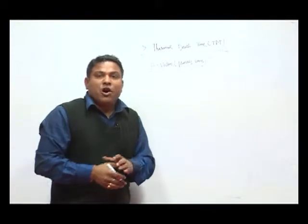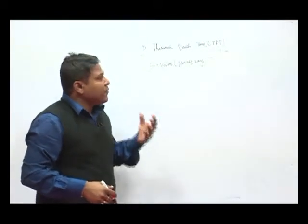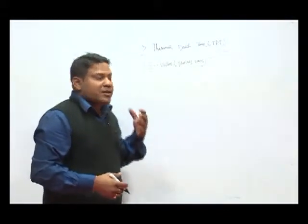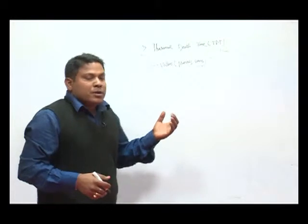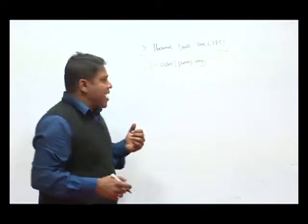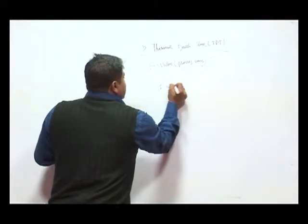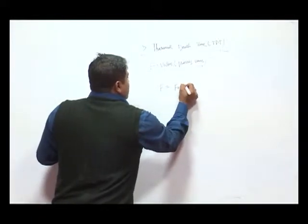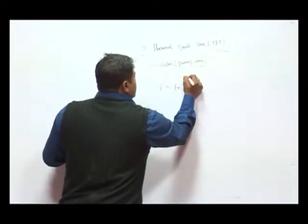Process time is all about a particular temperature at which a certain food product is kept on a constant temperature in order to achieve the desired value. And F value is generally referenced as F naught into T minus T 121.1 upon Z.